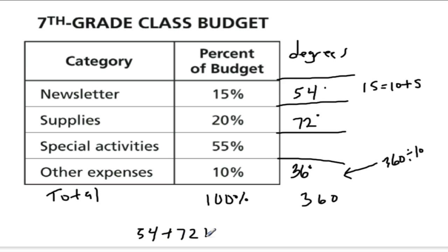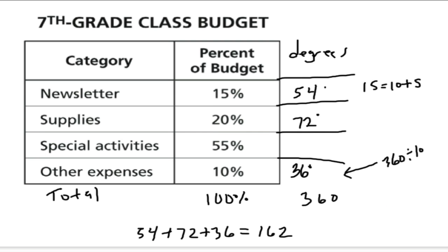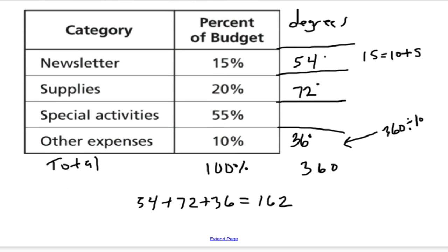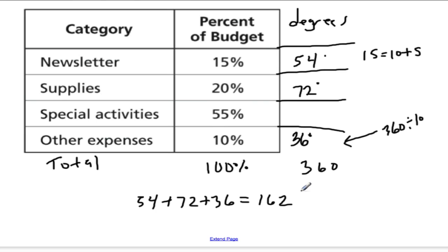54 plus 72 plus 36 equals 162. So 162 degrees have been used so far in the circle. If there are 360 degrees total, I want to take away what I used so far to find out what's left. So 360 minus 162.